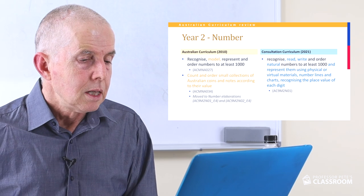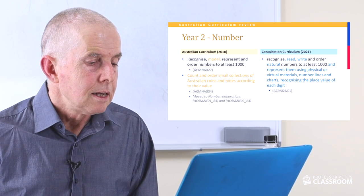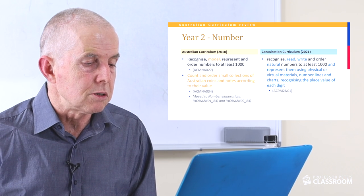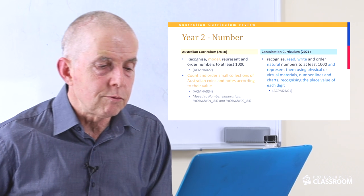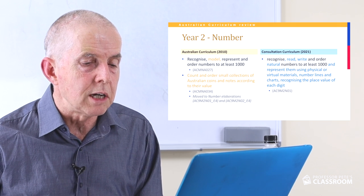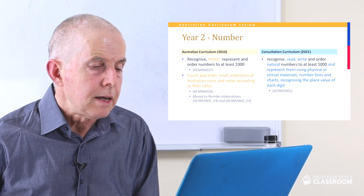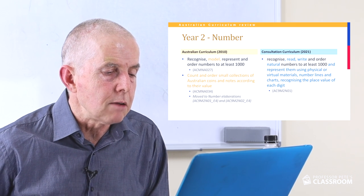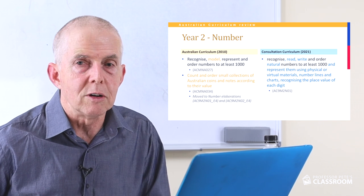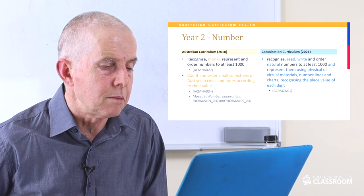The first number content descriptor in the new curriculum: the old one had recognise, model, represent and order numbers to at least a thousand, plus count and order small collections of Australian coins and notes. The new one has retained the idea of recognising and ordering numbers to at least a thousand and added more detail, which is a very good idea. The counting and ordering of coins has moved to a different part of the proposed curriculum, so it will appear but in a different spot.